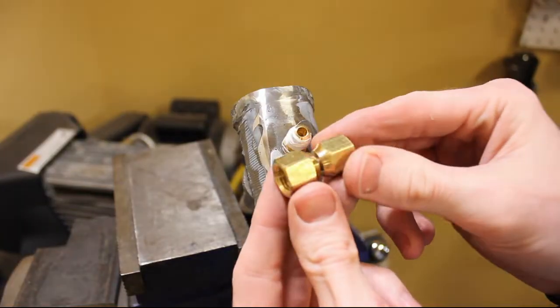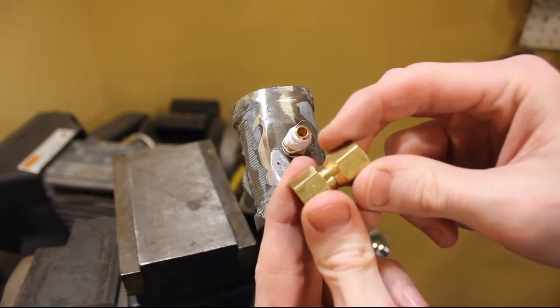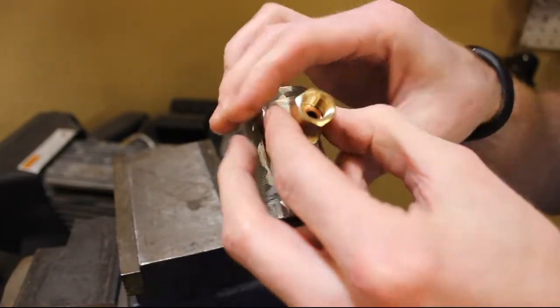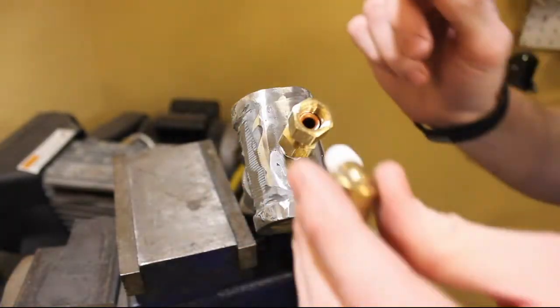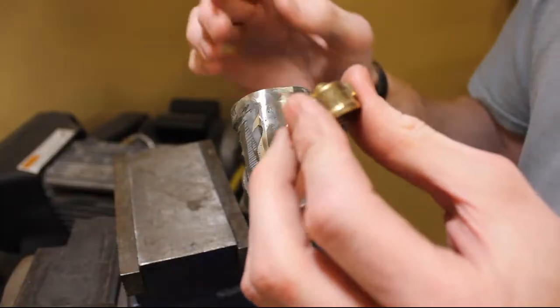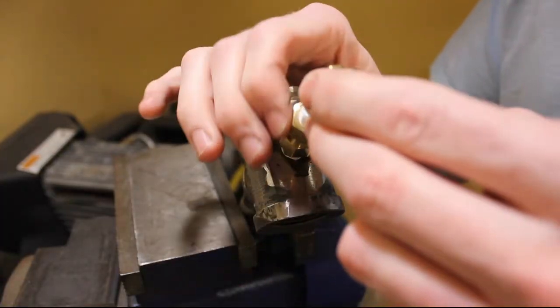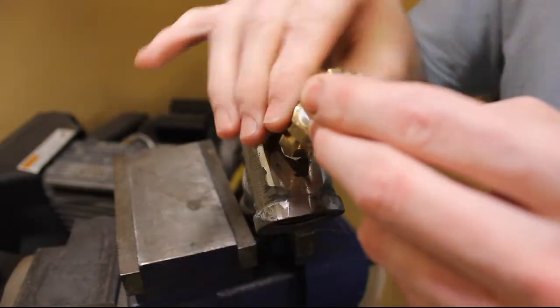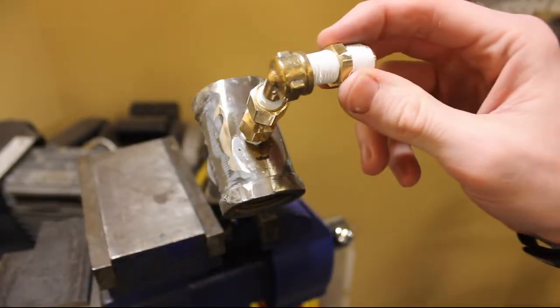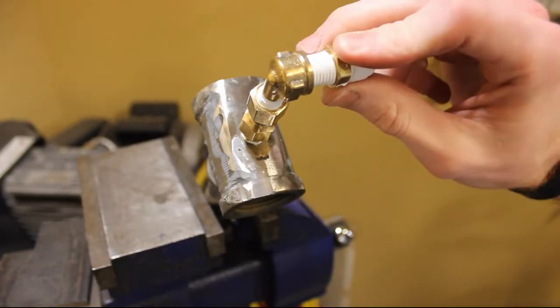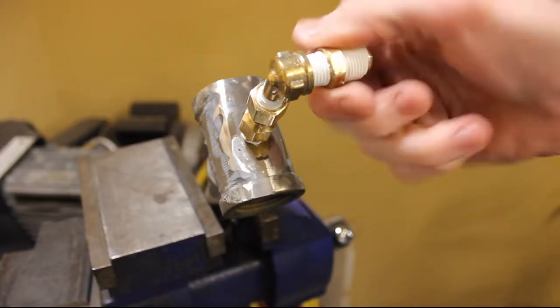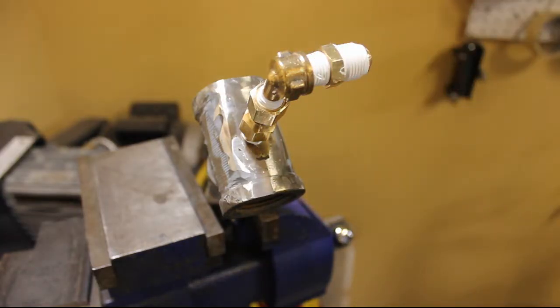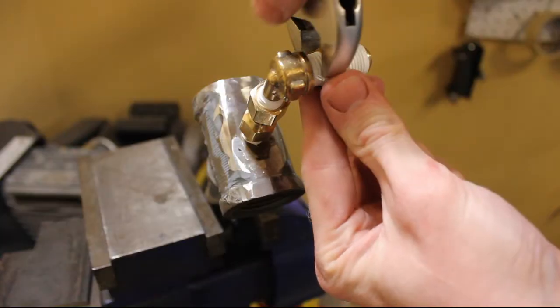After that, you can connect your 1/4 inch flare by 1/4 inch flare swivel. Then the elbow that goes from 1/4 inch flare to 1/4 inch female pipe thread. And then finally, the fitting that goes from 1/4 inch pipe thread to 3/8 of an inch flare. This will be what you're hooking up to your propane tank.